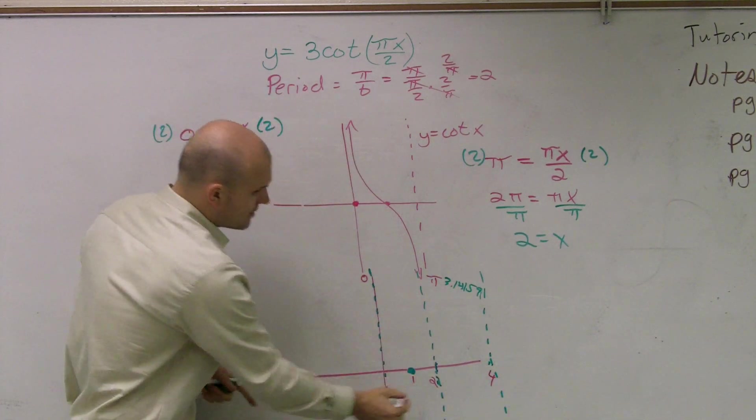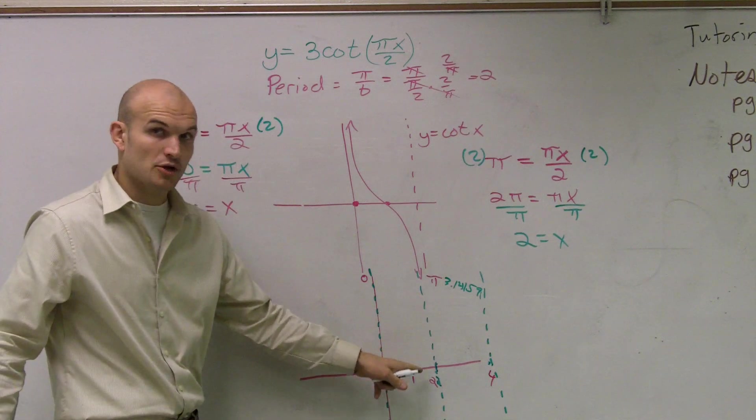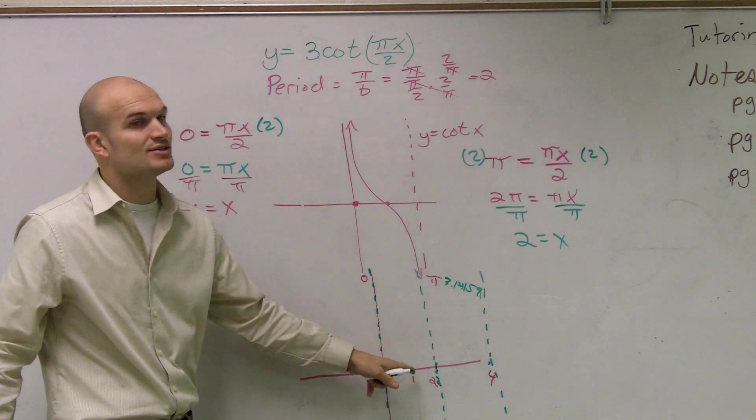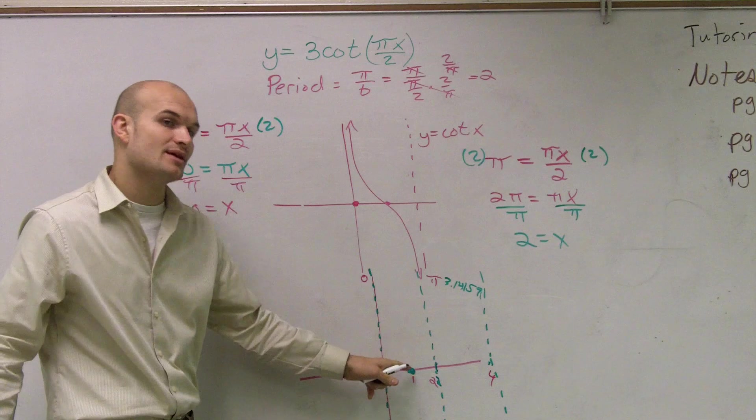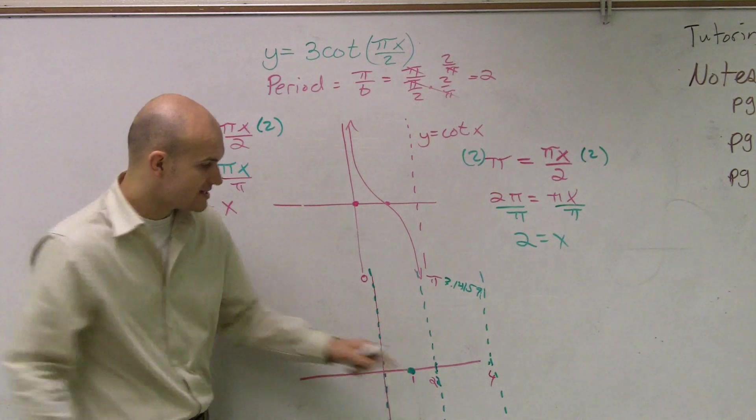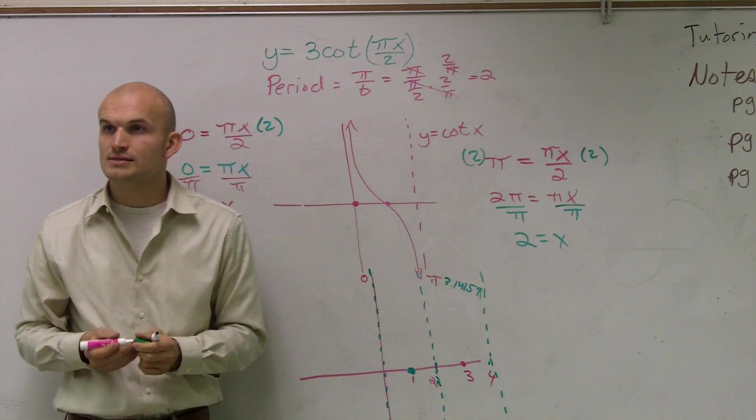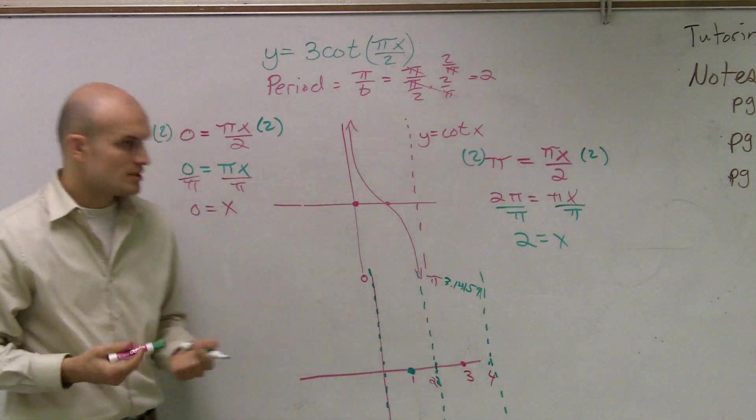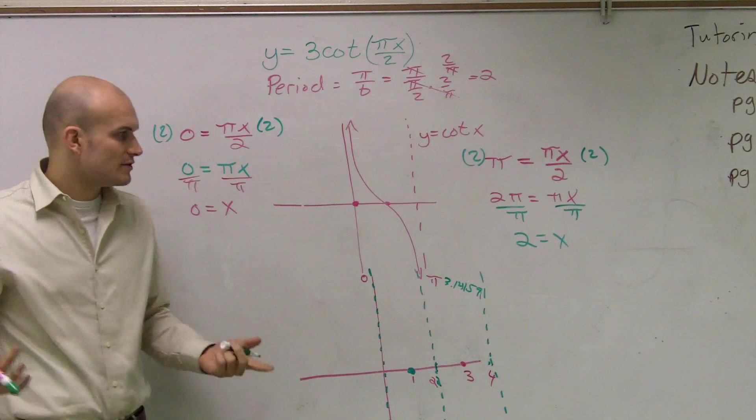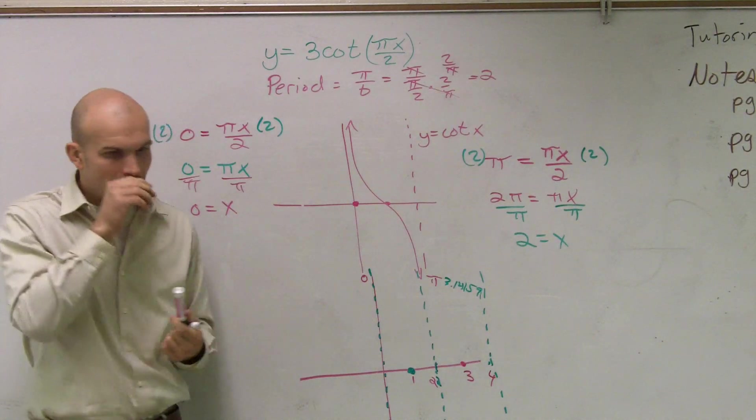And then if this is at 1, if I add 2 to 1, add another period to it, I'm going to get this at 3. Make sense? So now let's go and see what is our graph going to look like. Now ladies and gentlemen, the best way to really do this is to find coordinate points and plug them in.